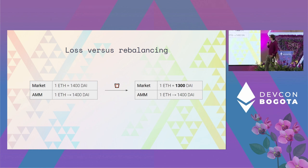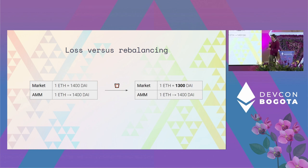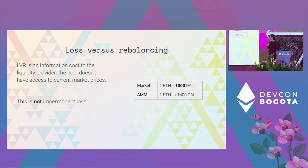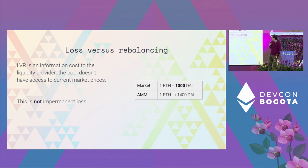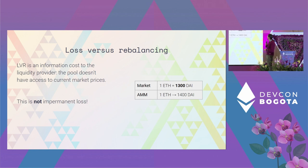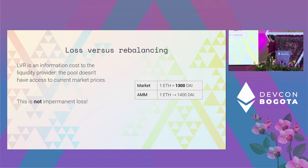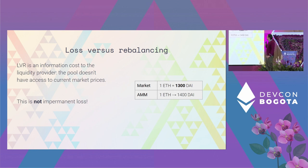The AMM doesn't know anything about the market price, but if you can execute the transaction and you're guaranteed that it's going to be finalized, you can take this arbitrage opportunity. This is more or less the essence of loss versus rebalancing: the information asymmetry between the AMM and the market. If the AMM had perfect information, it would be very happy to use the current market price. However, this is not the case, and this money loss is basically the cost of providing liquidity on an AMM currently.